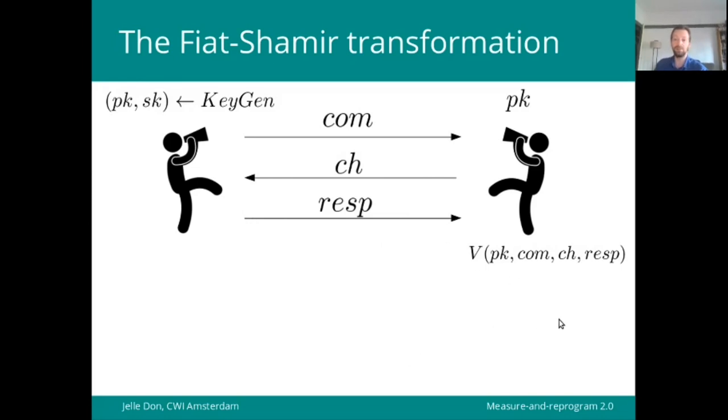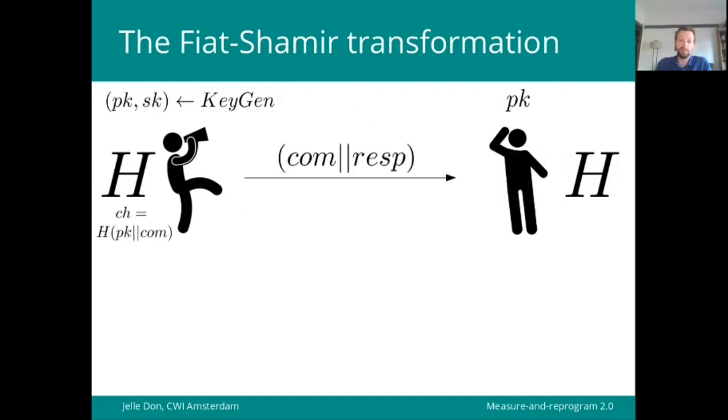Since this is an interactive protocol, we could ask if we could make it non-interactive. The Fiat-Shamir transformation says that we may do so by introducing this public hash function h, and then let the prover, instead of waiting for a random challenge, compute a challenge himself, simply by hashing the public key in the commitment. Then it only needs to send the commitment and the response, since the verifier on his side also knows how to evaluate h, so it can recompute this challenge, and verify again that the response is correct with respect to this particular commitment and challenge.